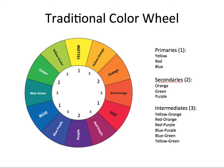If we look at those primaries and mix them — we mix yellow and red, we get our first secondary, orange. If we mix red and blue, we get our second secondary, which would be purple. And then if we mix blue and yellow, we get our third secondary, which would be green. So orange, green, and purple are our three secondaries, and they are made by mixing the primaries.